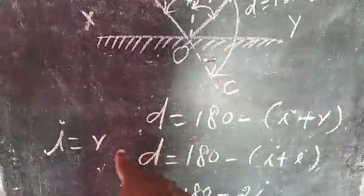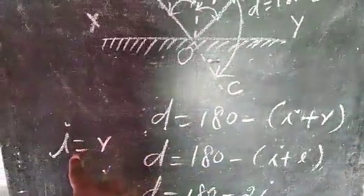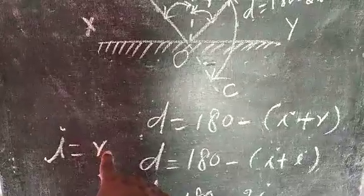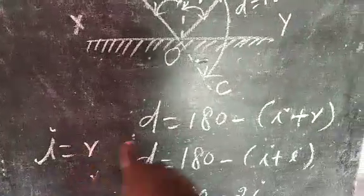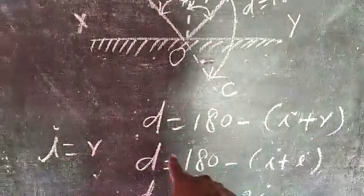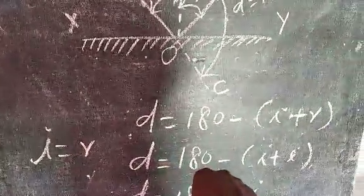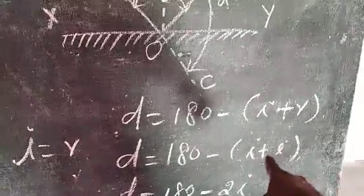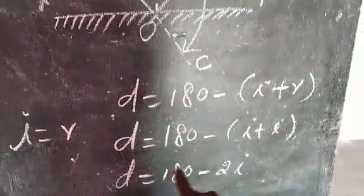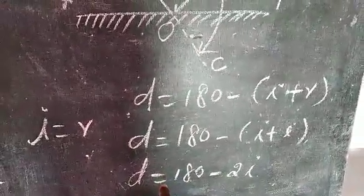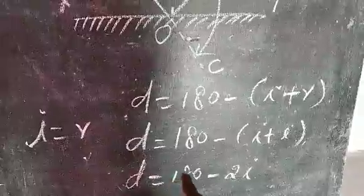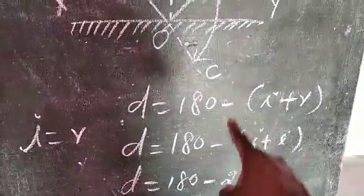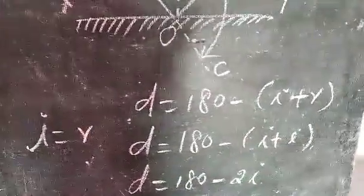By the law of reflection, angle of incidence equals angle of reflection. Substituting this value: D equals 180 degrees minus I plus R, and since R equals I, the angle of deviation equals 180 degrees minus 2I. This result is obtained from the law of reflection.